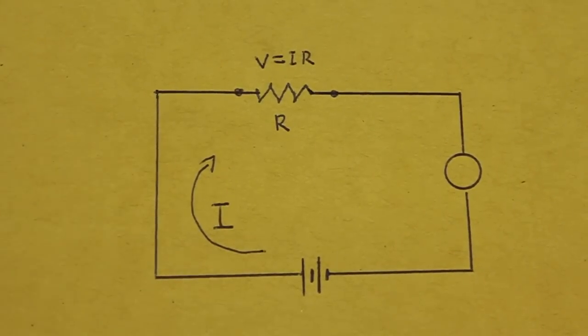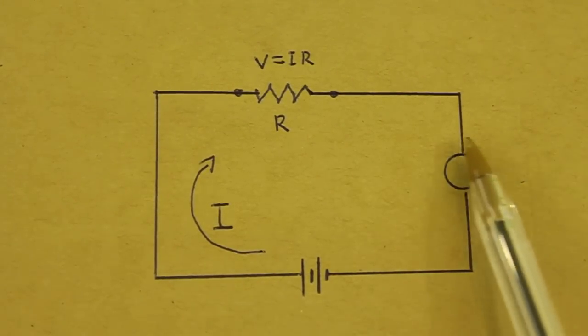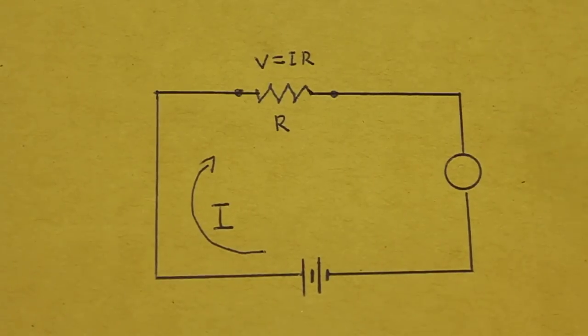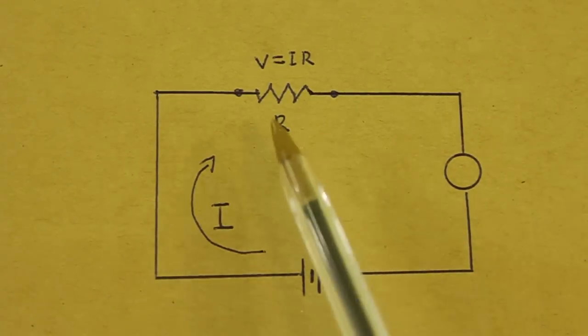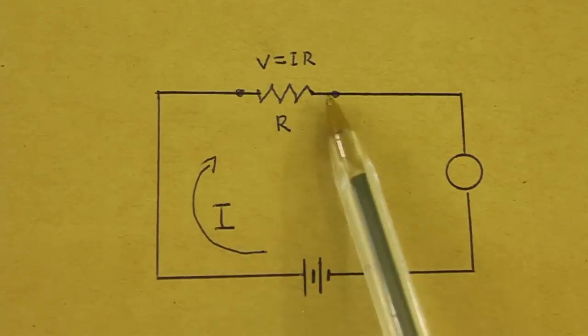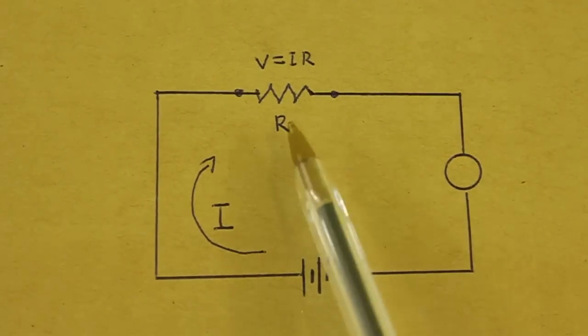The principle of operation of a shunt is very simple. Consider this circuit. We have a battery or power supply which feeds a certain load, for example a lamp, motor, etc. And in this circuit we put a resistor with value R.